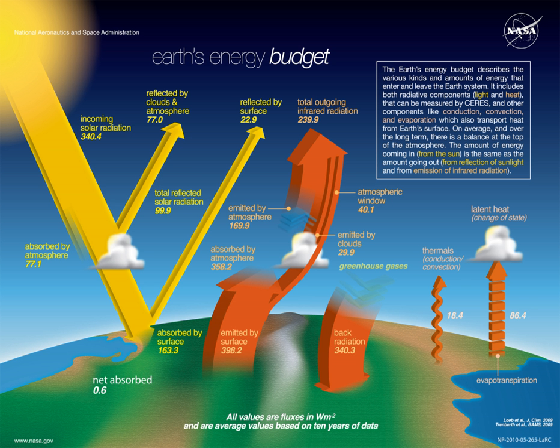Anything that increases or decreases the amount of incoming or outgoing energy will change global temperatures in response. However, Earth's energy balance and heat fluxes depend on many factors, such as atmospheric composition, the albedo of surface properties, cloud cover and vegetation and land use patterns. Changes in surface temperature due to Earth's energy budget do not occur instantaneously, due to the inertia of the oceans and the cryosphere. The net heat flux is buffered primarily by becoming part of the ocean's heat content, until a new equilibrium state is established between radiative forcings and the climate response.